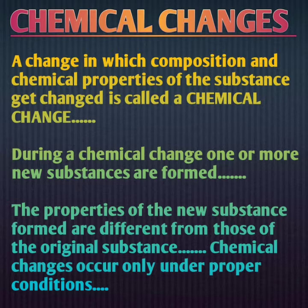If you burn a paper, it will convert into ash. Paper को burn करने के बाद जो ash form हो रही है, वो एक new substance है. The properties of the new substance formed are different from those of the original substance. अगर हम chemical composition दोनों का देखें — paper का और ash का — तो दोनों का chemical composition different होगा, उनकी properties different हैं. Chemical changes occur only under proper conditions.